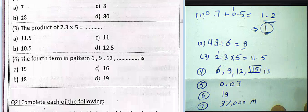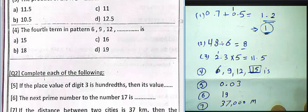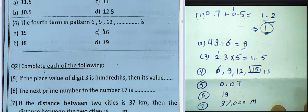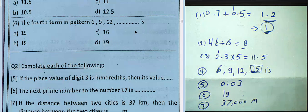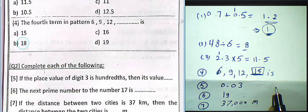Question 4 is a pattern. The numbers shown are 6, 9, 12. In this example, the rule is adding 3 each time: 3 plus 6 equals 9, 9 plus 3 equals 12, 12 plus 3 equals 15. So we must write 15 and choose letter E.